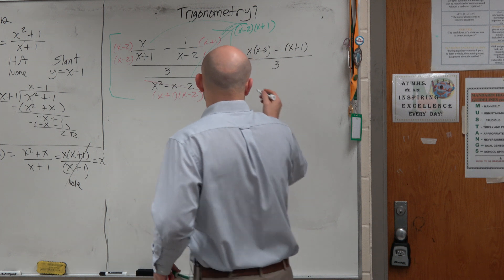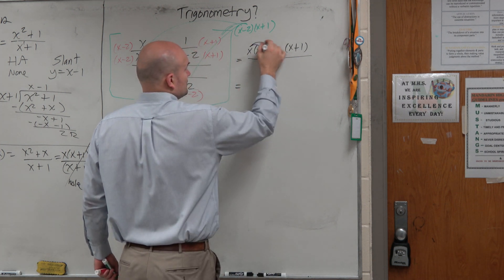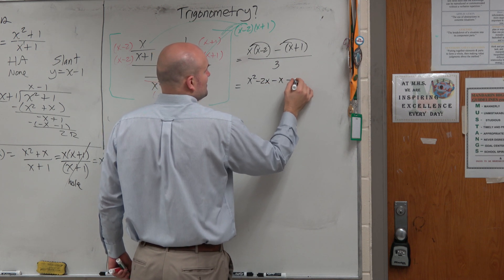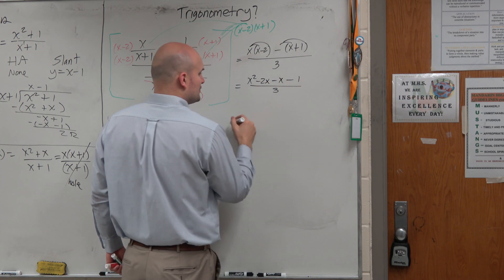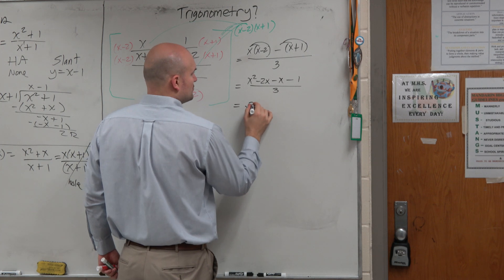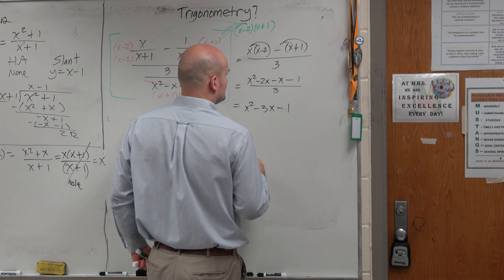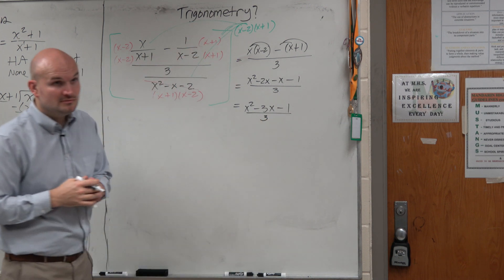And you're just left with x times x minus 2 plus, oh let's change this to a minus, minus an x plus 1 all over 3. And now can we just go ahead and simplify this to give us x squared minus 2x minus x minus 1 over 3, which is x squared minus 3x minus 1 divided by 3, right?